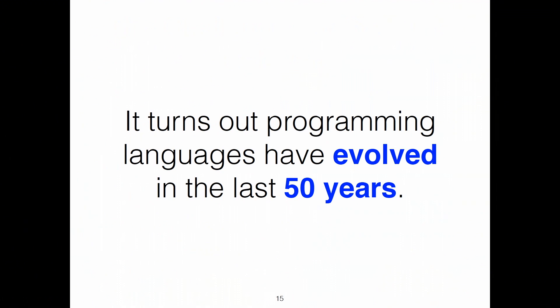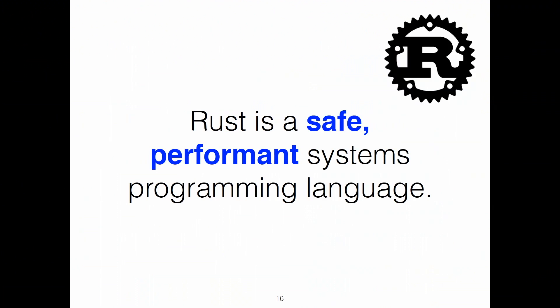But we can do better. System software is still mostly written in C and some C++. It turns out that programming languages have evolved in the last 50 years. Programming language researchers have done a lot of work, and Rust is a distillation of some promising ideas from programming language research into a productive production language. Rust is a safe, performant systems programming language — low-level enough to do systems programming, but high-level enough to have a lot of the memory safety and productivity of a high-level language. So it's a nice platform for writing system software.